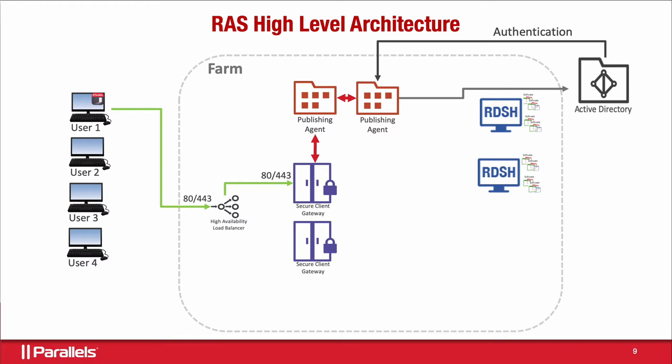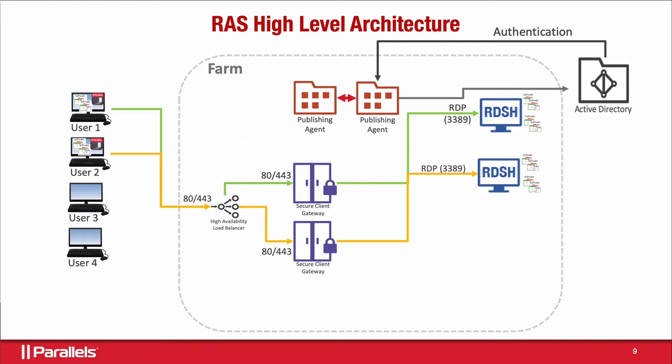The gateway does the heavy lifting but is dumb — it asks the publishing agent what to do with an incoming connection. The publishing agent has Active Directory perform authentication; we don't authenticate anything in Parallels, we use AD. Once authenticated, the publishing agent queries AD for the user's group membership and then delivers the appropriate resources — desktop, applications, whatever. RDP port 3389 is only used between the secure client gateway and the remote desktop session host, not from end users.